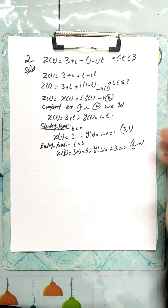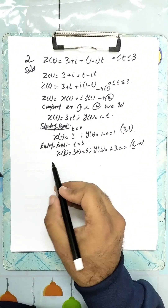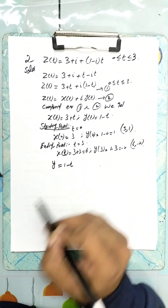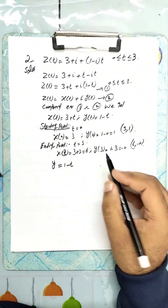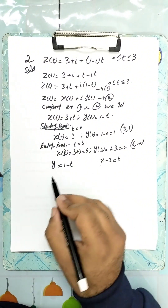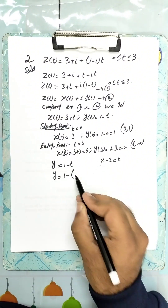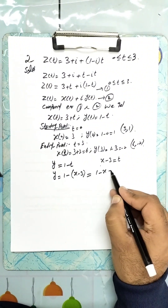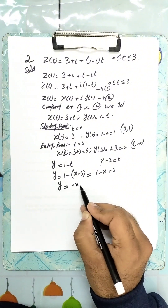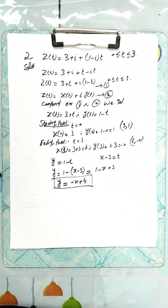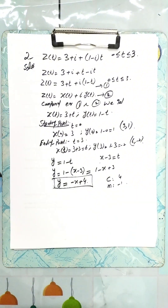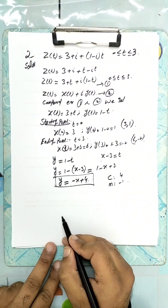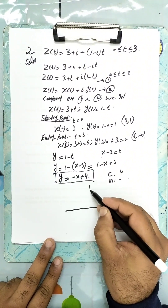To find the general path equation, we eliminate the parameter t. From x we get x − 3 equals t, and substituting into y equals 1 − t gives y equals 1 − (x − 3) equals −x + 4. So y equals −x + 4, which is a linear equation with y-intercept 4 and slope −1.